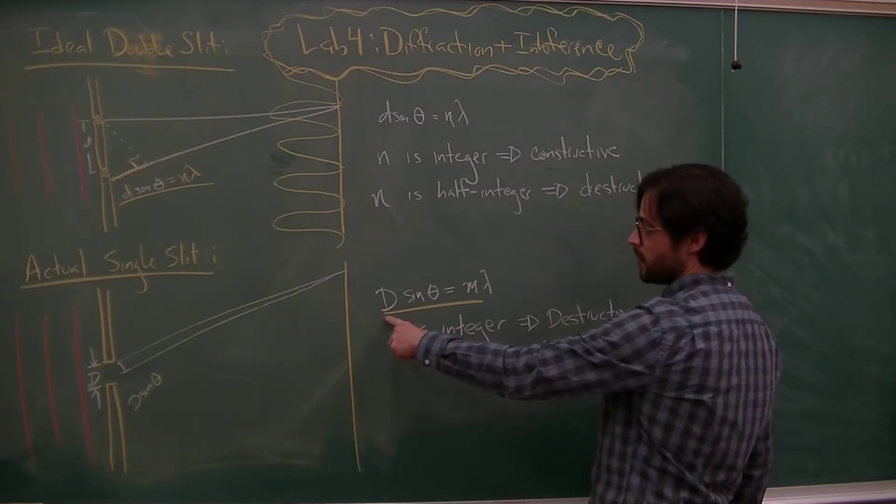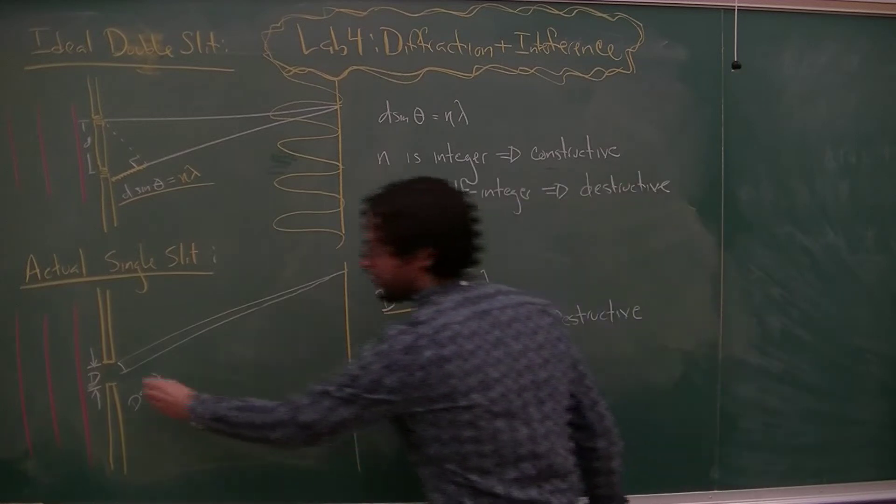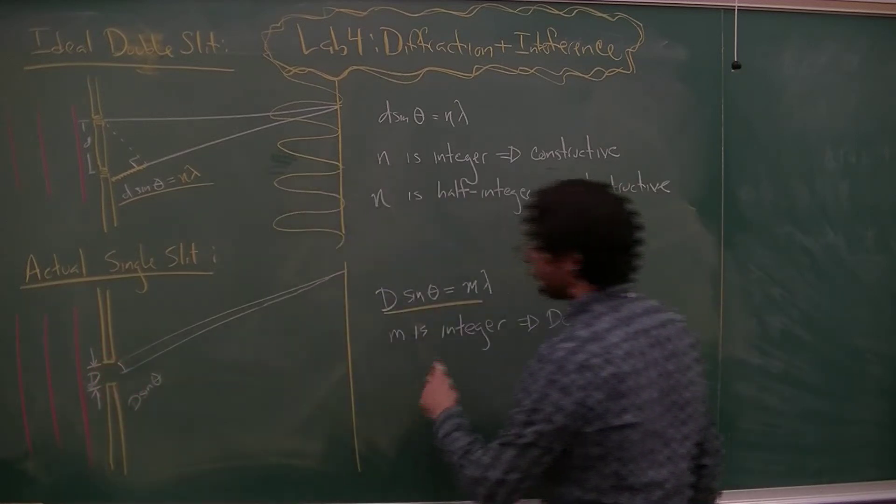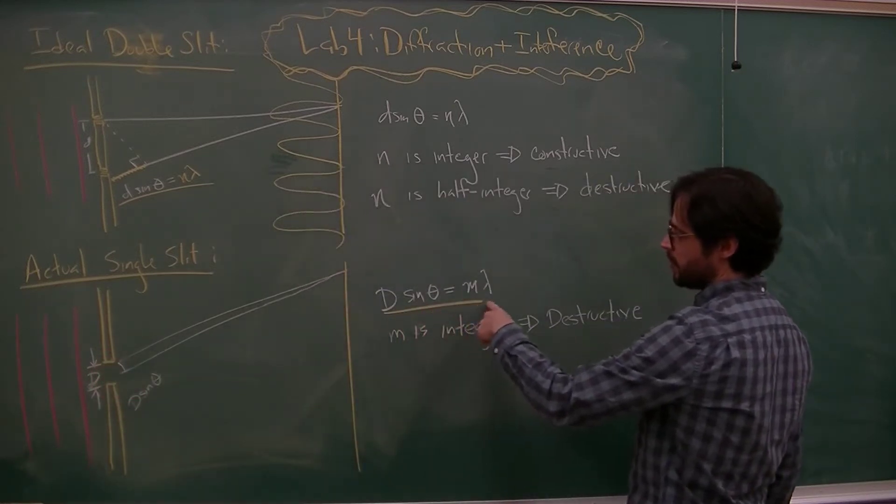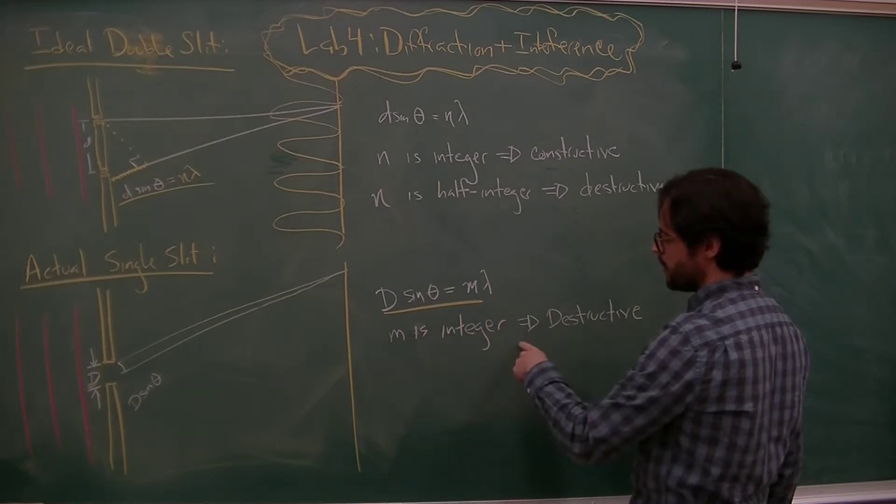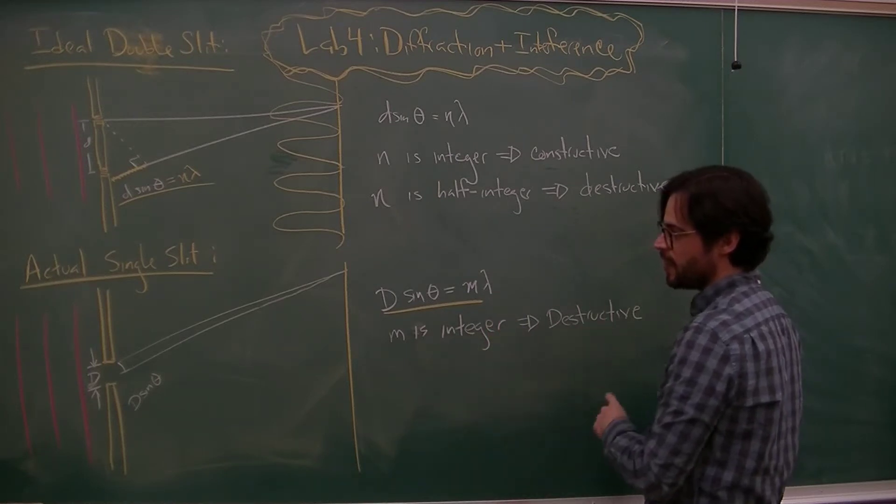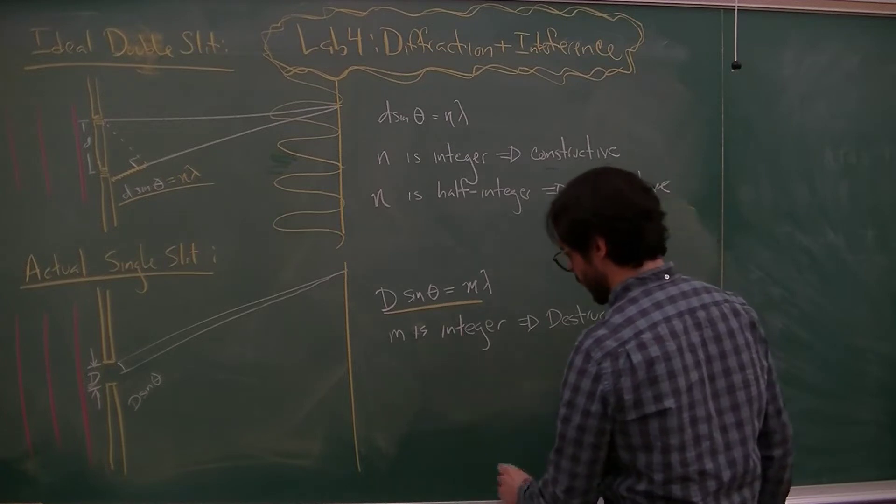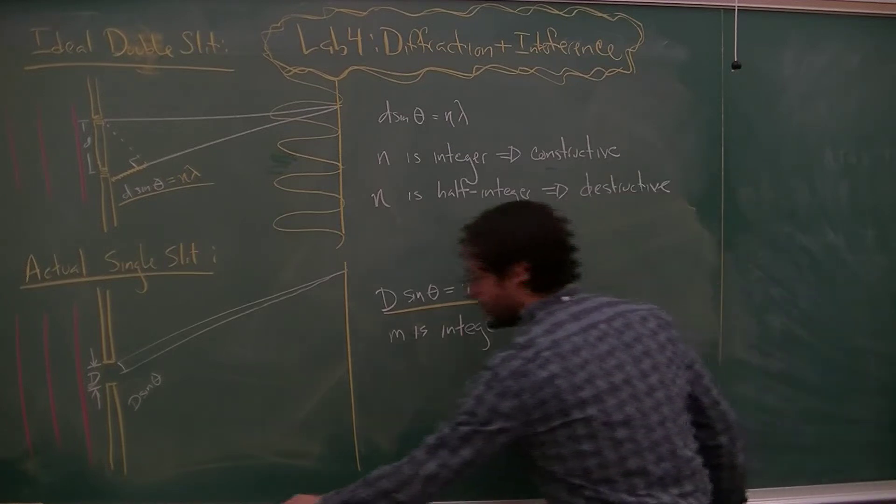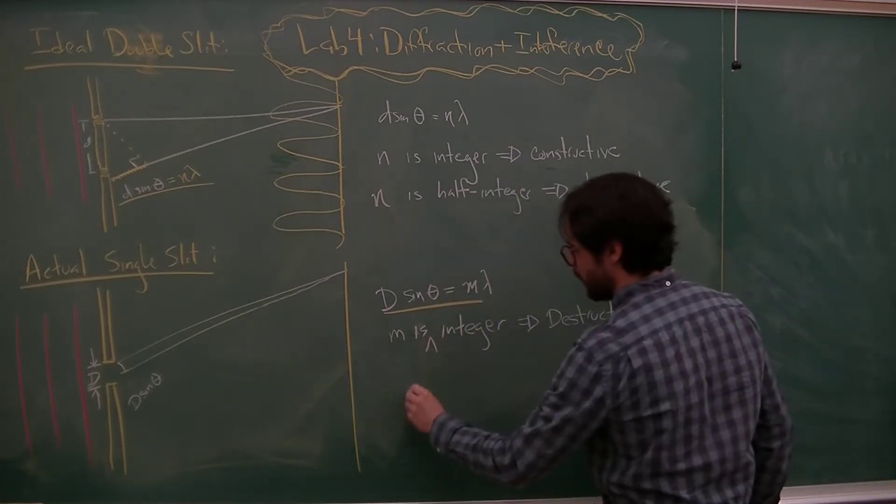But what you get is that a really kind of annoyingly similar-looking relationship will tell you where the dark spots are. So d sin theta, where d is the width of the slit itself, the width of the slit d sin theta is equal to m lambda, and if m is an integer, what I get is destructive interference. So m is an integer, and technically what should be true is m is a non-zero integer.